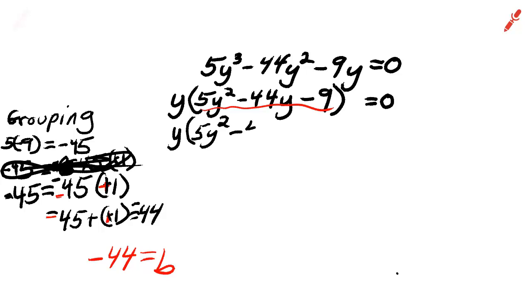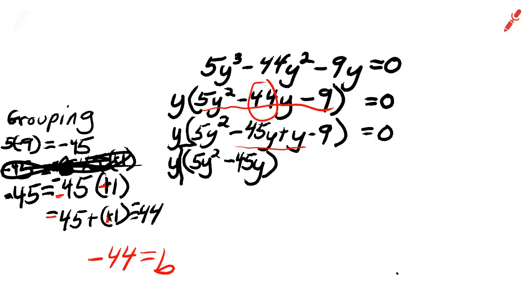That allows me to rewrite the trinomial as a four-term polynomial. Notice that negative 45 plus negative 45y plus y equals negative 44y. Now we group the first two terms. And we put a bracket around them. Because of that y out front.